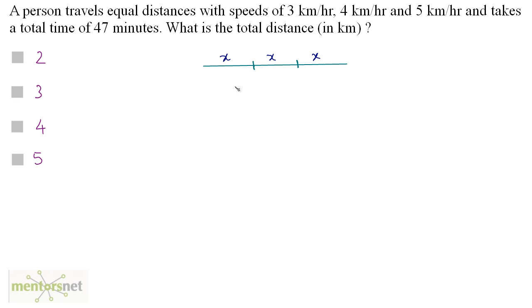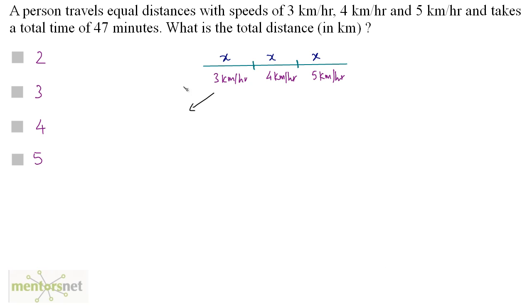The speed at which the first part is travelled is 3 km per hour. The second part is travelled at 4 km per hour and the third part is travelled at 5 km per hour. Let us calculate how much time it takes to travel each part. For the first part, the time taken will be distance upon speed, that is x by 3.